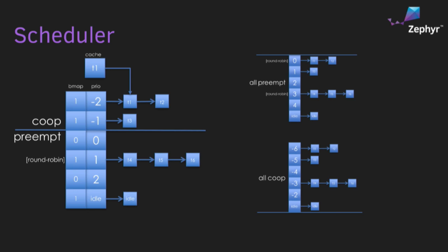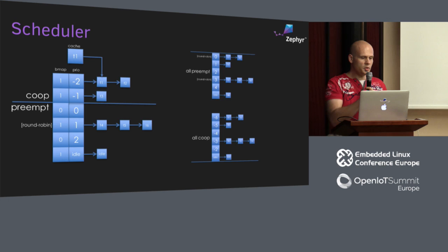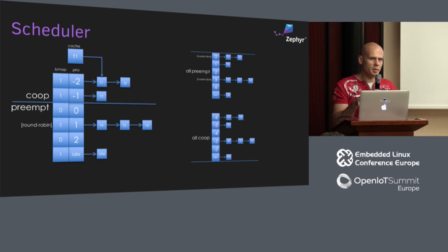If you have code running on Zephyr right now, your code will be able to at least compile on the new kernel — you might have to do some slight adjustments, like needing more space. With one kernel you now have one scheduler: the kernel keeps track of what threads are ready at each priority. We no longer have fibers and tasks — we only have threads. Their differentiation as co-op or preemptible just depends on their priority: positive priority gives you a preemptible thread, negative priority gives you a cooperative thread.